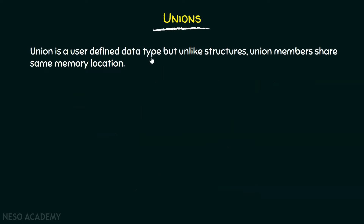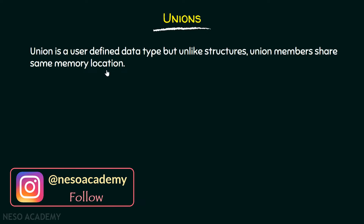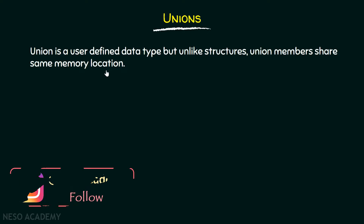Union is a user-defined data type, but unlike structures, union members share the same memory location. It should be noted that union is also a user-defined data type, but unlike structures, union members share the same memory location — they do not have different memory locations. That is the difference between union and structures.